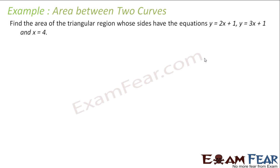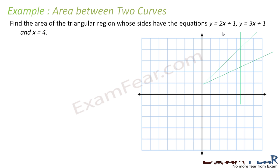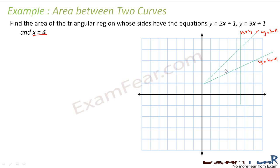We have to find the area of the triangular region whose sides have three given equations. Let's draw this. We have three equations. x equal to 4 is the first equation, then y is equal to 2x plus 1, and y is equal to 3x plus 1. We drew this and to find the area of this triangle, we can first find the points of intersection.